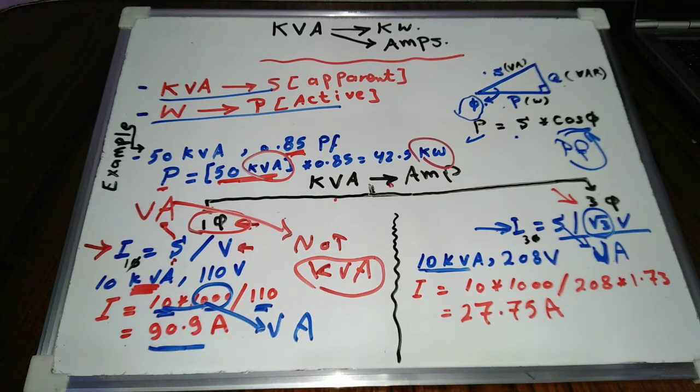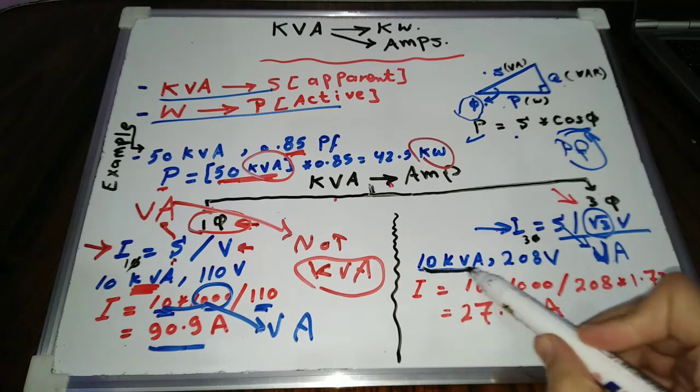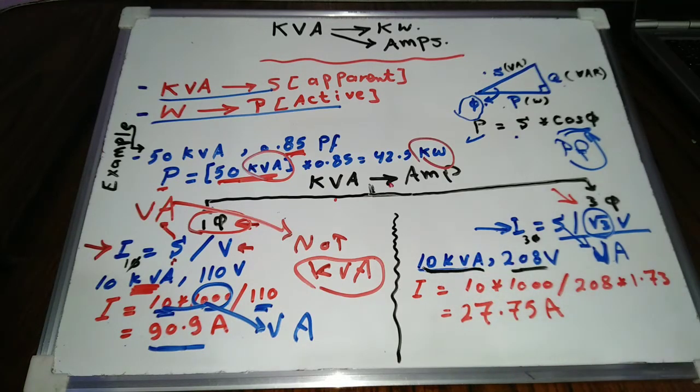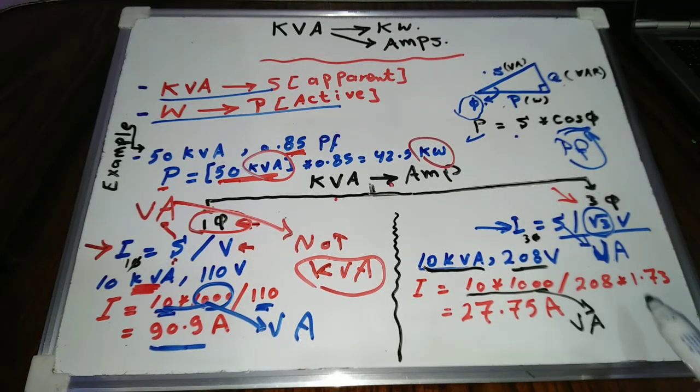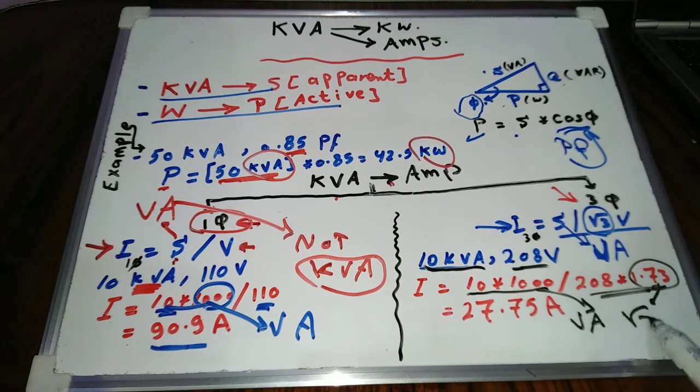If we have a three phase load of 10 kVA and operating voltage of 208 volt, then the current of this load equals 10,000 divided by 208 times 1.73, equals 27.75 amps.